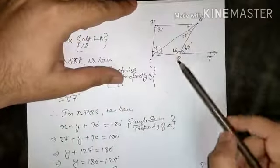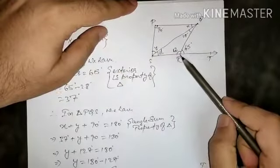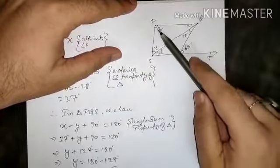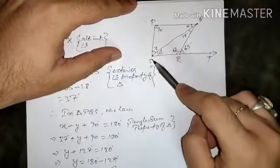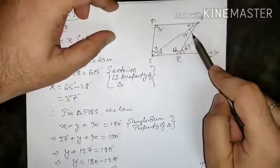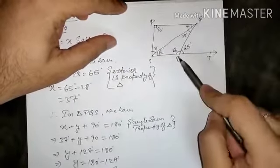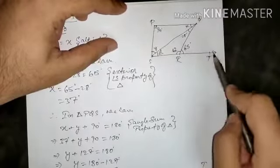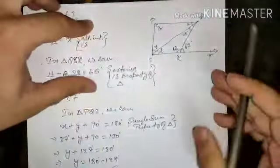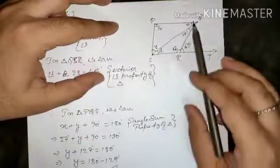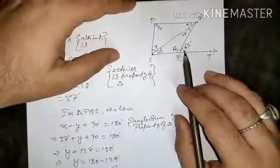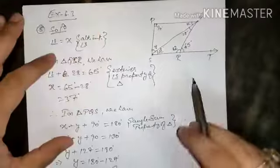In the figure you can see that PQR is a quadrilateral and one side SR is extended to T. PQ is perpendicular to PS. The angle SQR is given as 28 degrees and angle QRT is given. Angle SQR is equal to 65 degrees. This is the given information and we have to find out the value of X and Y.